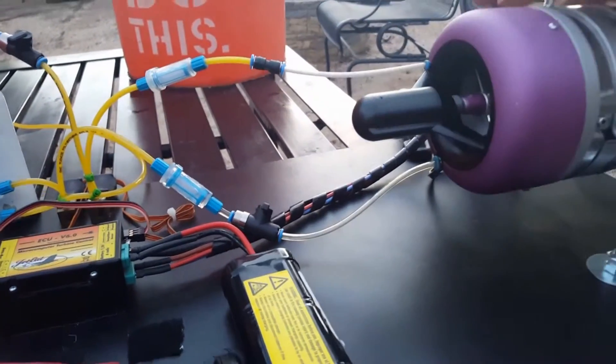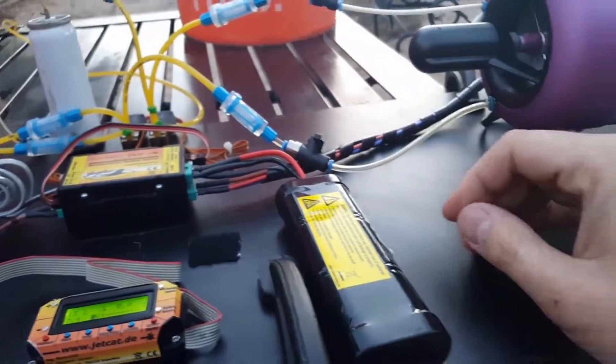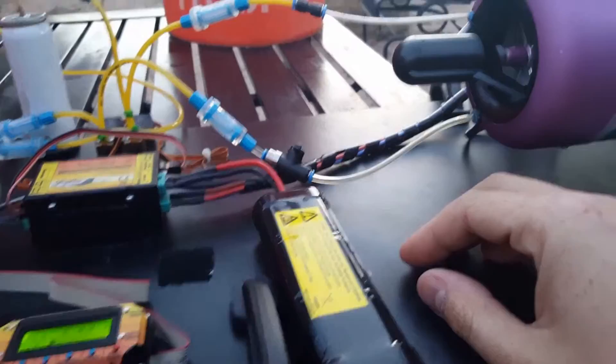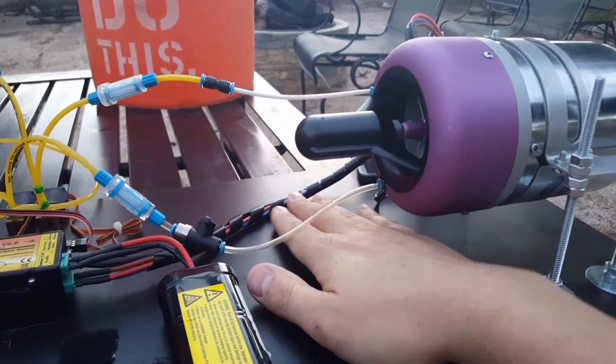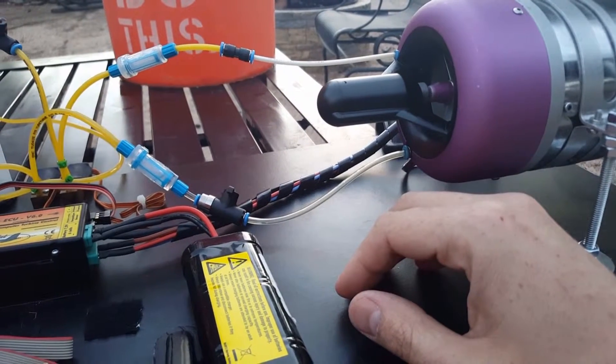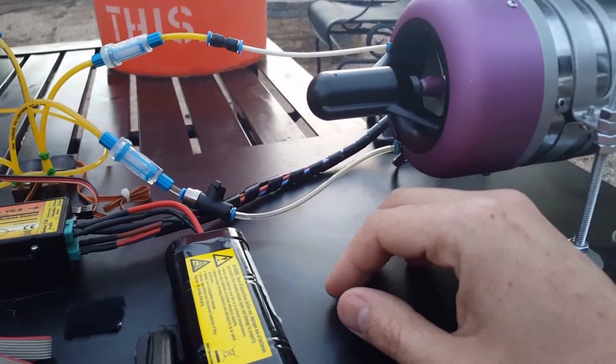Before you fire up, if you don't have a FOD screen on, always check to make sure that you have nothing on here: a screw, piece of plastic, piece of paper, anything that you don't want getting sucked into your engine. It's just good practice to always keep an eye out for that.